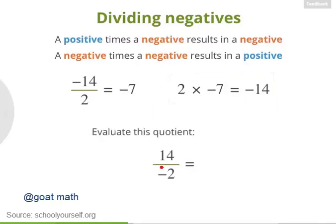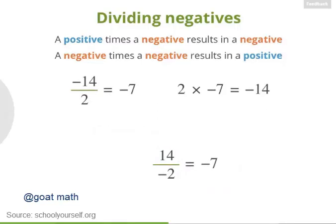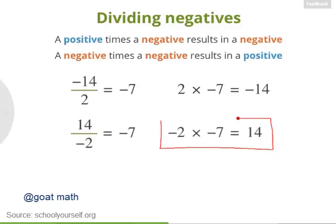What happens if the number we're dividing by is negative? So what's 14 divided by negative 2? In other words, what number can you multiply by negative 2 to get positive 14? This is also negative 7, and that's because negative 2 times negative 7 equals positive 14.